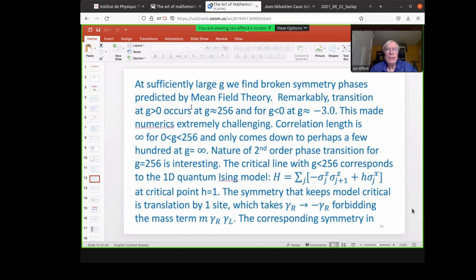So we expect to get free Majorana dispersion, at least for small enough G. So sufficiently small G, we find broken symmetry phases predicted by mean field theory. Remarkably, the transition for positive G occurs at G of 256. And for negative G, it occurs at G equals minus 3. So Paul Fendley actually invented a slightly different model than this, where the interactions were on sites 1, 2, 4, 5 instead of 1, 2, 3, 4. And then we had a similar phase diagram, but the transition occurred at much, much smaller G, it turned out. So this very large value of G makes the numerics extremely challenging. But nonetheless, Armin Rahmani was able to perform them. So the correlation length is infinite for G between 0 and 256. It only comes down to perhaps a few hundred at G equals infinity, which made the numerics challenging.